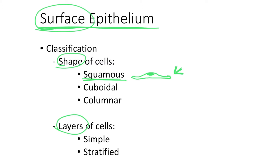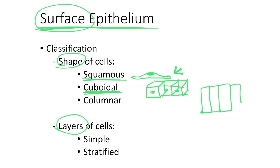An epithelium composed of cells with a flat shape is named squamous epithelium. If we look at the tissue and we see that the cells have a cube shape, this tissue is named cuboidal epithelium. And if we have very tall cells that look like columns, they are named columnar cells, and columnar cells make up what we call the columnar epithelium.